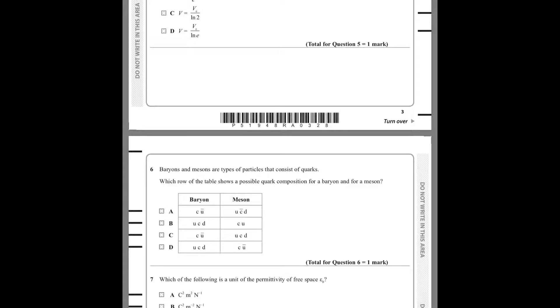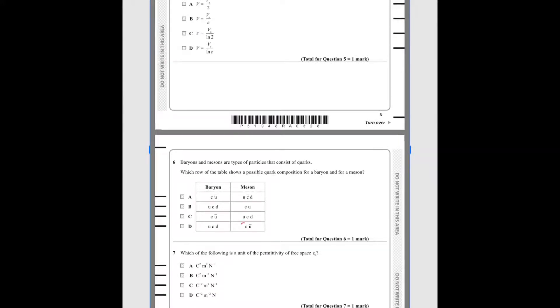Baryons and mesons are a type of particle which consists of quarks. Which of the table shows a possible quark combination of a baryon and a meson? A baryon is a particle which has three quarks. It does not have any antiquark, but three quarks, for example neutrons and protons. A meson is a particle which has two quarks, and in that it has one quark and one antiquark. One quark and one antiquark is this. The antiquark is denoted as this line. This is a quark and this is an antiquark. Since baryons has three quarks, the answer is D.